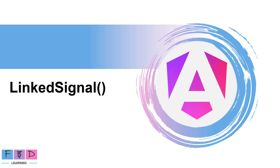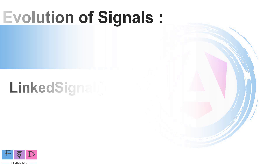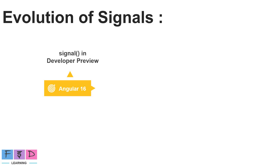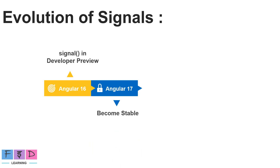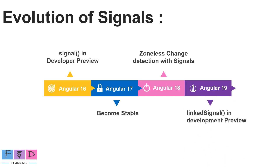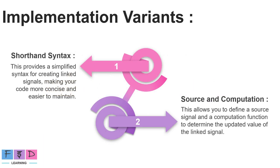Let's explore the concept of linked signal. First, let's quickly discuss the evolution of signals. Signals were first introduced in Angular 16 in developer preview, but support for many features was limited — for example, signals could not be used as inputs to components. Next, signals became stable in Angular 17. Angular 18 further improved signal stability and introduced zoneless change detection with signals, offering a more efficient and lightweight approach to detecting changes. And now, Angular 19 introduced a new concept in developer preview called linked signal.